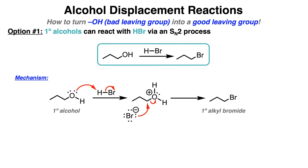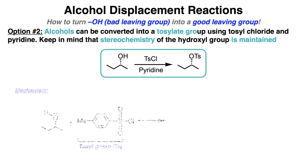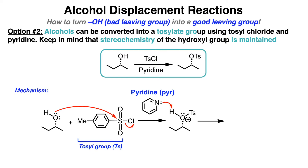The second way to displace an alcohol is to use tosyl chloride and pyridine. The mechanism starts with one of the lone pairs of O attacking the sulfur atom of a tosyl group. Then another arrow from the sulfur-chloride bond breaks to form a lone pair on Cl. Then pyridine acts as a base to deprotonate the extra hydrogen, leaving us with an O-Tos product. Keep in mind that the stereochemistry of the hydroxyl group stays the same — the hydroxyl group in the starting reagent is on a dashed bond, and the O-Tos group in the product is still on a dashed bond.